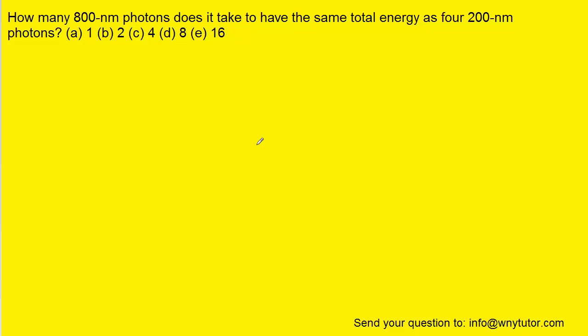We can begin to solve this question by writing down the equation for the energy of a photon. That equation shows us that the energy of a photon is equal to Planck's constant times the frequency of the photon.